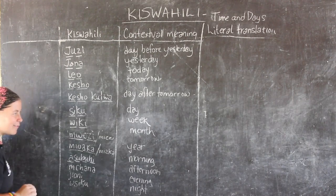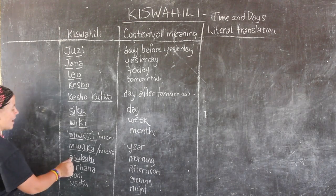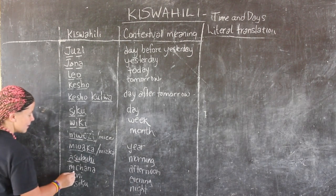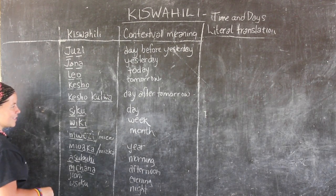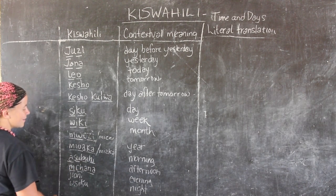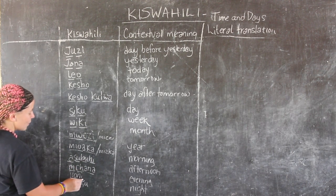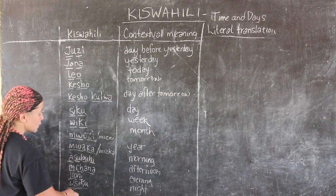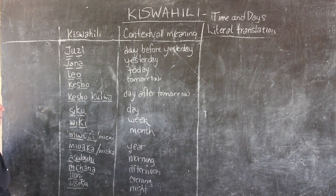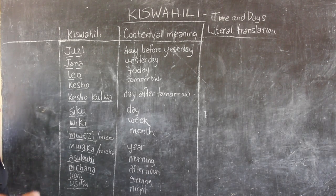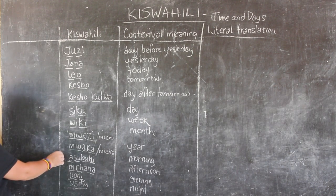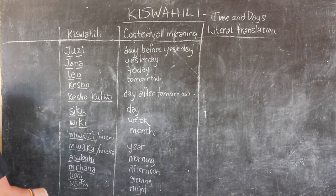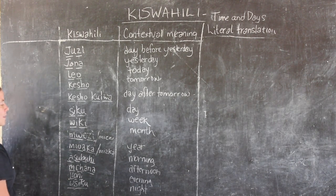Asubuhi — we've already seen this and hopefully you remember it means morning, with emphasis on 'bu.' Mchana means afternoon. Jioni means evening. And usiku is a new one — usiku means night time. So: asubuhi is morning, mchana is afternoon, jioni is evening, and usiku is night.